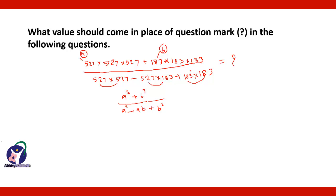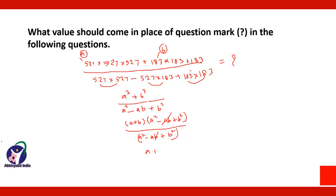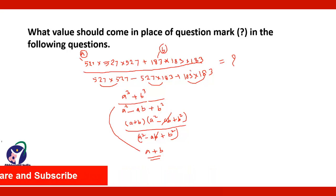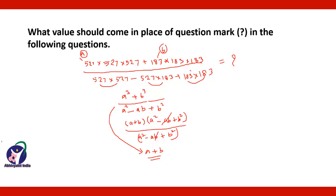Divided by A squared minus AB plus B squared in the denominator. Now A cubed plus B cubed equals (A+B)(A squared minus AB plus B squared). So that bracket and this bracket cancel, and you get A plus B — which is 527 plus 183, equal to 710.